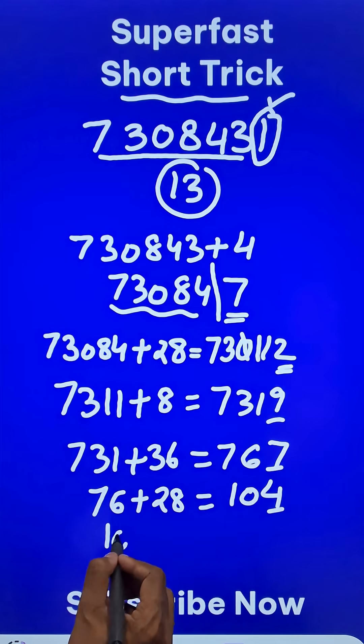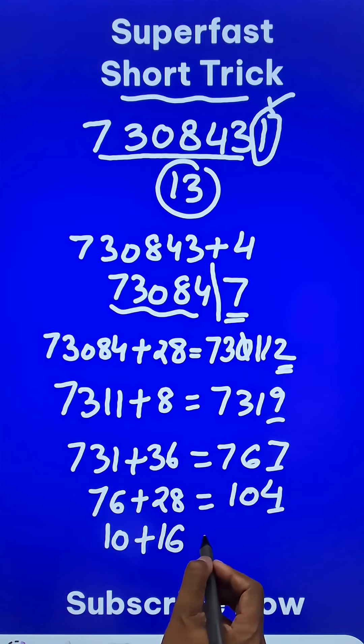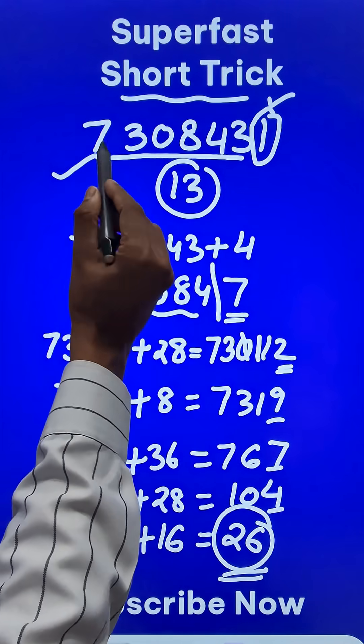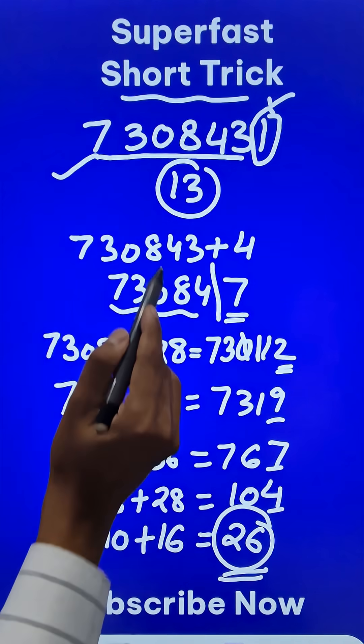And finally, separate out the last digit. 10 plus 4 times 4, 16 gives us 26. And 26 is divisible by 13, right? And therefore, the entire number 7308431 is divisible by 13.